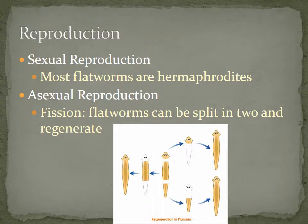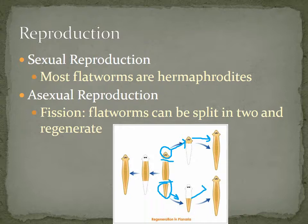More commonly — and what we'll observe in lab — is asexual reproduction. This form is called fission, where flatworms can split into two and regenerate. In lab, we'll cut a flatworm into three pieces. The head piece will grow into a whole new flatworm, the tail piece will grow into another, and the middle section will grow into a third worm. That's how they reproduce asexually, and we'll look at that in lab this week.